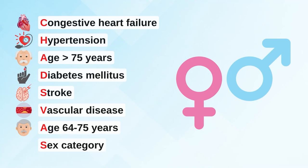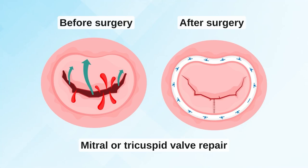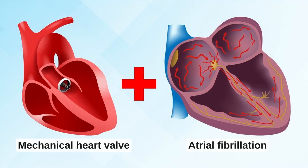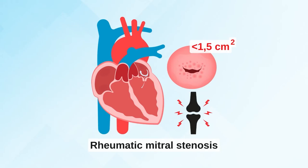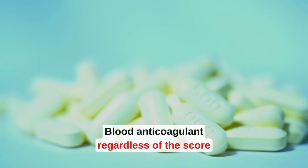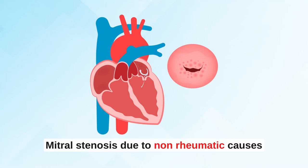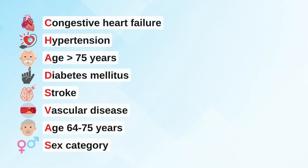The final S stands for sex category — female or male. To summarize: when dealing with bioprosthetic valves, valve repairs, or mitral stenosis due to non-rheumatic causes, we perform the CHA₂DS₂-VASc score. For mechanical heart valve or severe rheumatic mitral stenosis with a mitral valve area less than 1.5 square centimeters, we give anticoagulation regardless of the score — no CHA₂DS₂-VASc scoring is needed.